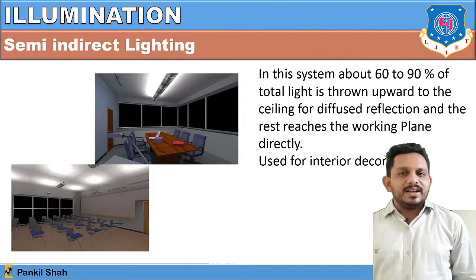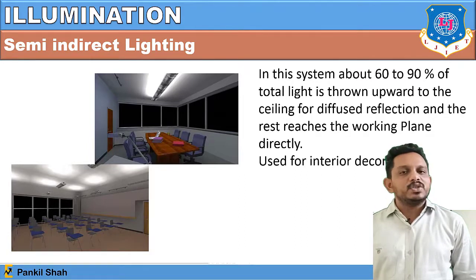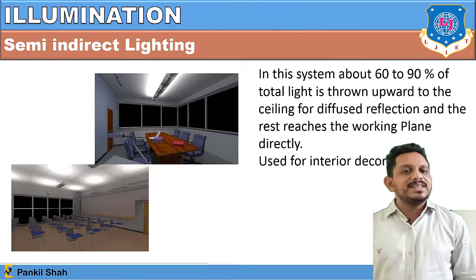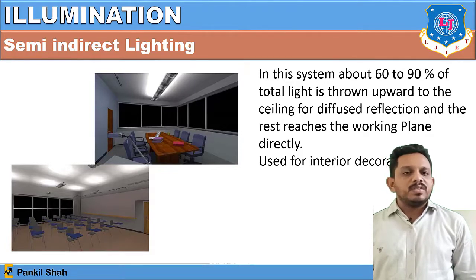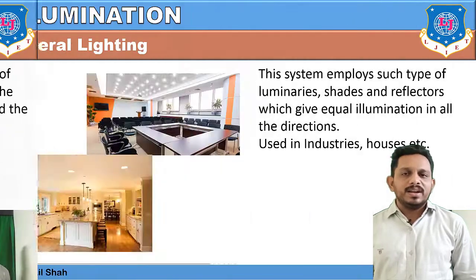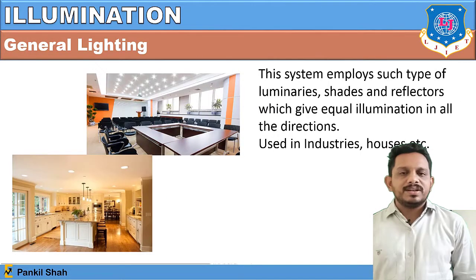In semi-indirect lighting, 60 to 90 percent of the total light is thrown upwards to the ceiling for diffusion via a reflector, and the rest reaches the working plane directly. The major part is given to the upward ceiling and only a small portion of light comes to the object. This type is used for interior decoration.